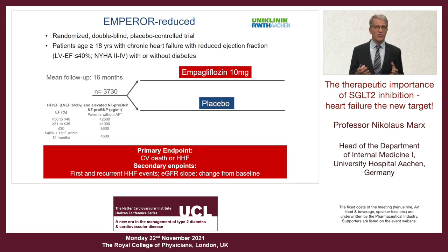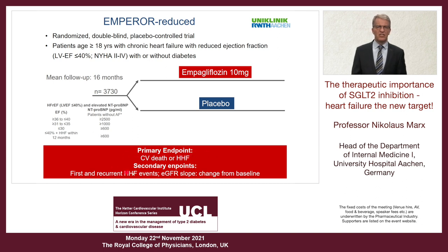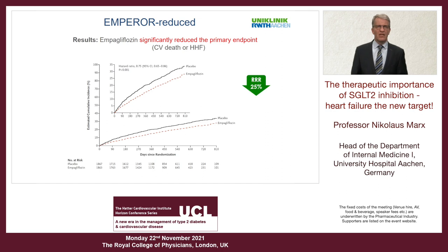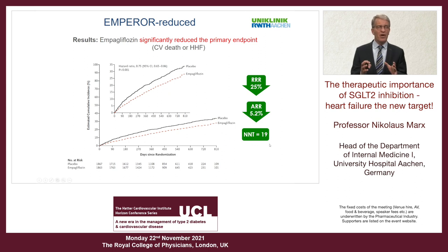The second trial was EMPEROR-Reduced, with a similar population of HFrEF patients randomized to empagliflozin versus placebo. The primary endpoint was CV death or heart failure hospitalization. The result was a significant reduction of this combined endpoint by empagliflozin compared to placebo — a relative risk reduction of 25% and number needed to treat of 19, comparable to what was seen in DAPA-HF.